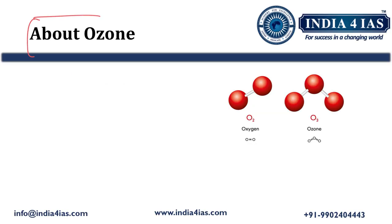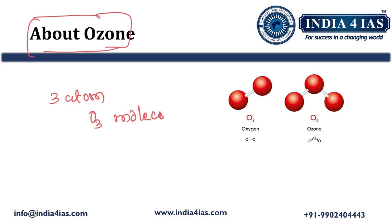Now we will briefly look into what is ozone. Ozone is an oxygen molecule — specifically a three-atom oxygen molecule, O3. In regular oxygen we have two atoms: O2. In ozone, three atoms of oxygen are present, making it O3.